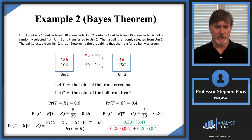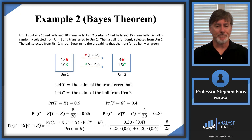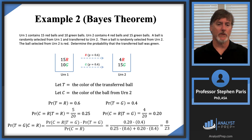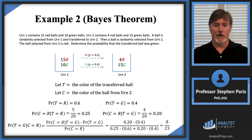Going through the rest of the calculation: in the numerator we get 0.08, and in the denominator we get 0.23, which you can write as 8 over 23. So a typical Bayes' theorem problem will always use the law of total probability in the denominator. The denominator becomes a sum of terms — in this case two, but there might be three or four — and the numerator will always be one of those terms. That's it for this example; I'll see you in the next video.